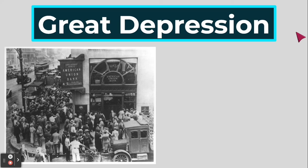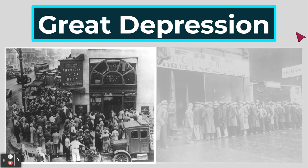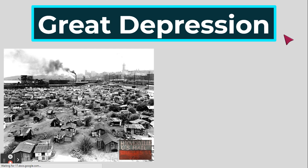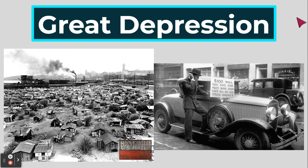People who needed money started doing runs on the banks — running to the bank to try to get their money out before it ran out. When the bank ran out of money, it closed its doors and didn't let anybody in. People also lost their jobs because businesses couldn't afford to pay employees. Twenty-five percent of Americans were unemployed. They lined up at bread lines to try to get free food and coffee, moved into Hoovervilles — little shanty towns that were not safe, sanitary, or climate controlled — and sold their belongings just to get any kind of money.